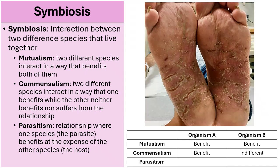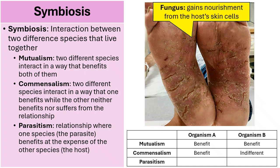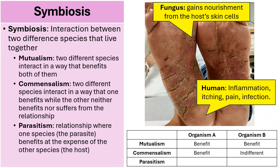One final example of parasitism is the fungal infection known as athlete's foot. The fungus benefits because it gains nourishment from the host's skin cells, and the human host is harmed because this causes inflammation, itching, pain, and can even lead to bacterial infections. In the table, when it comes to parasitism, one organism benefits and the other is harmed.